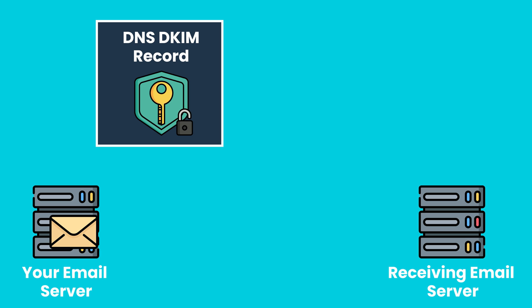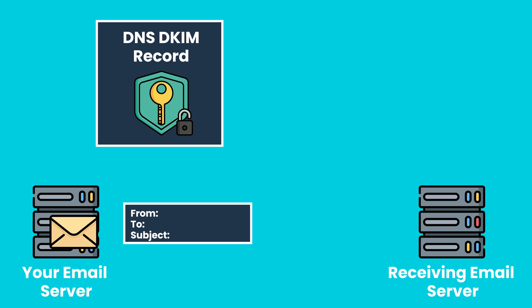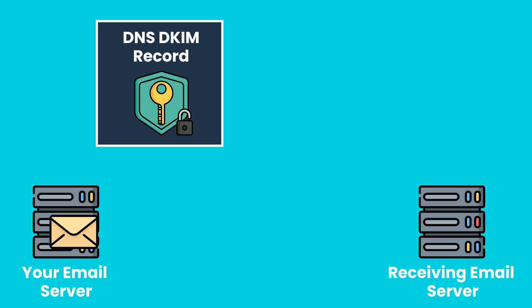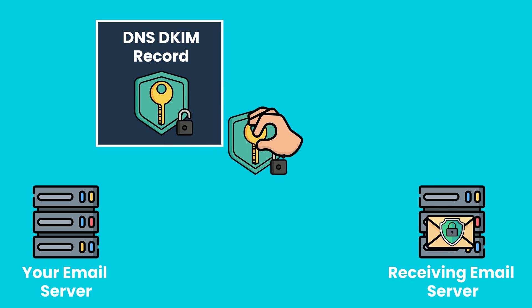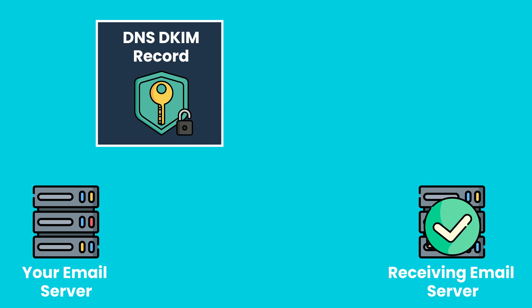When an email is sent, it's going to take a list of fields and create a hash of the contents of those. The email server then signs that hash with a private key that only the email server has. This is important because that helps validate the authenticity of that email. When an email server receives that email, it pulls down the public key from the DNS entry and validates the hash. If they match, then it knows this was a legitimate email and nothing was changed, because the only way it could be signed is with that private key the sending email server has.